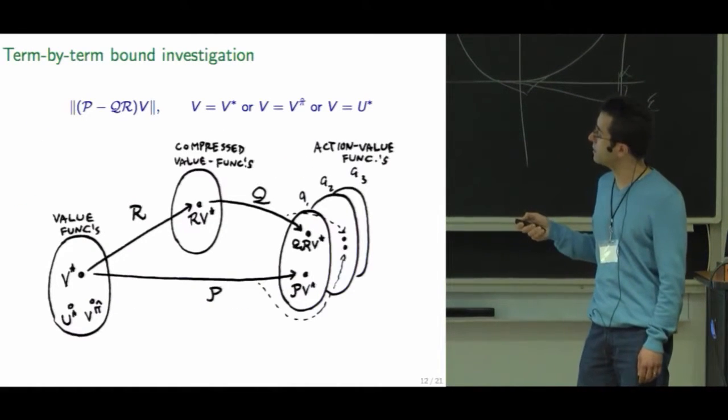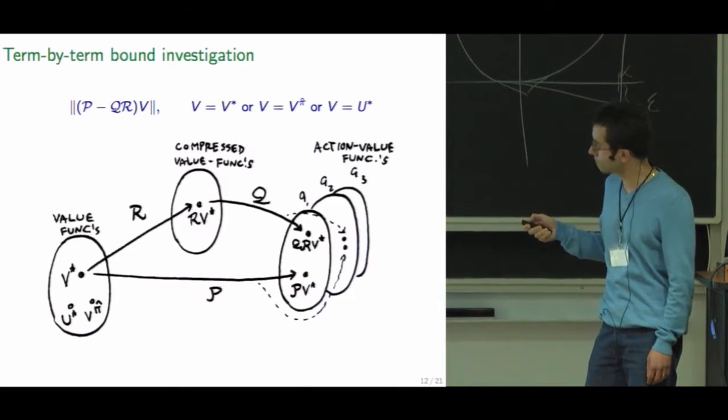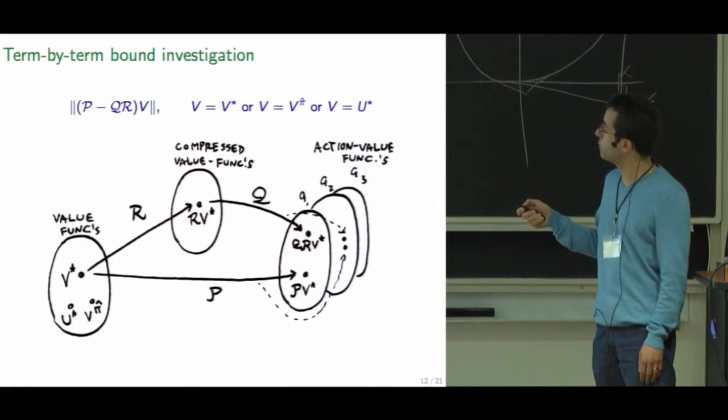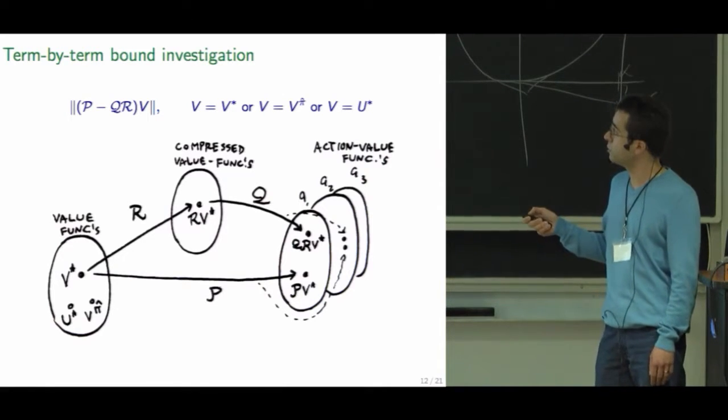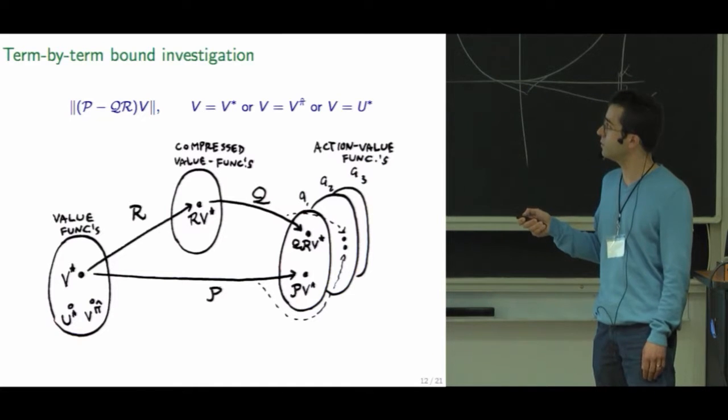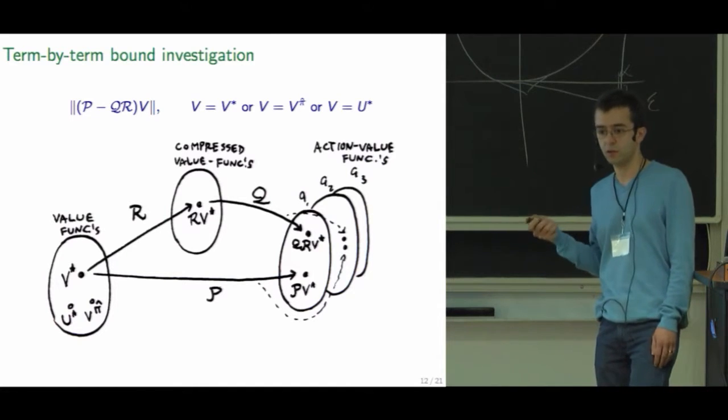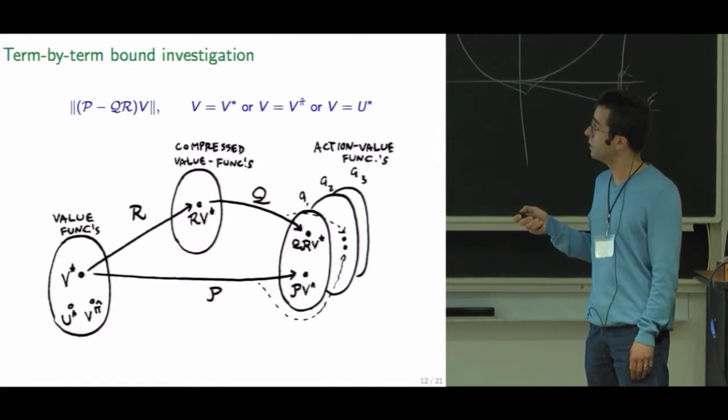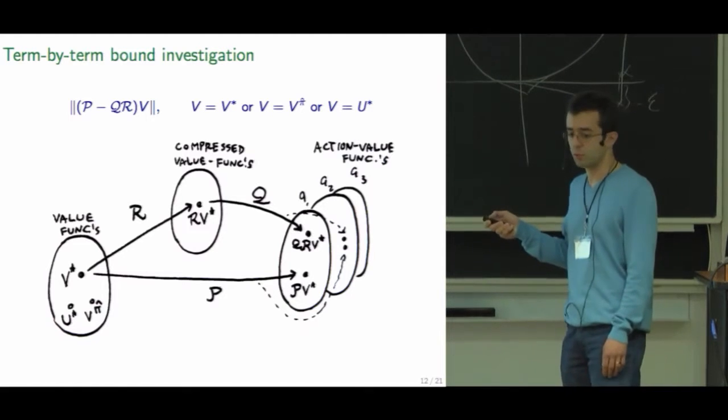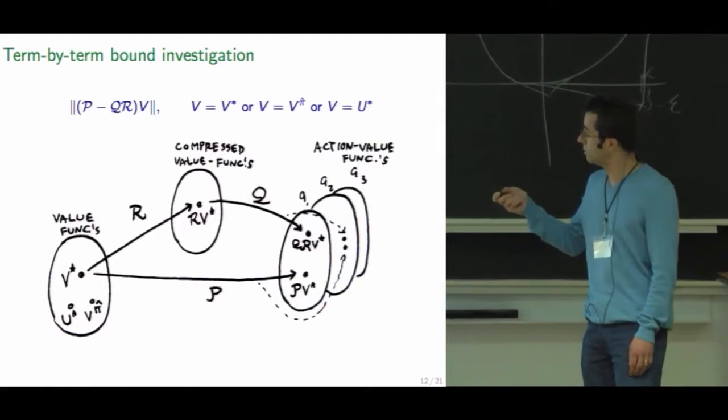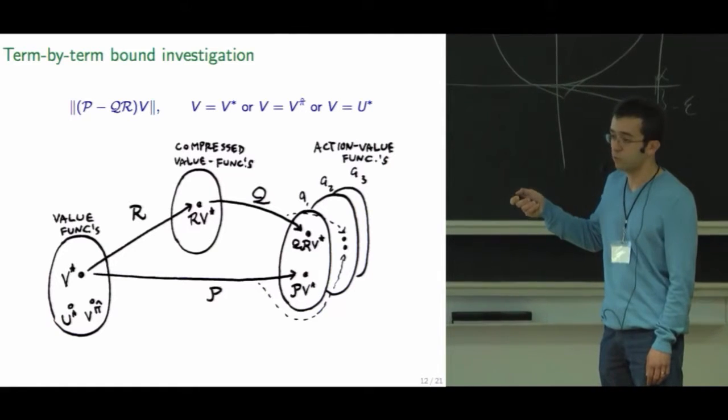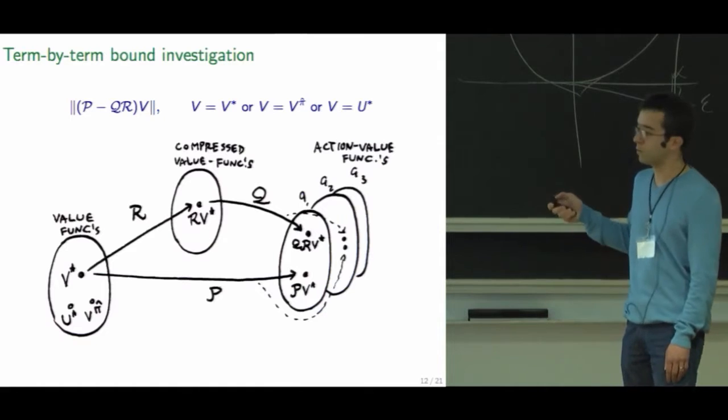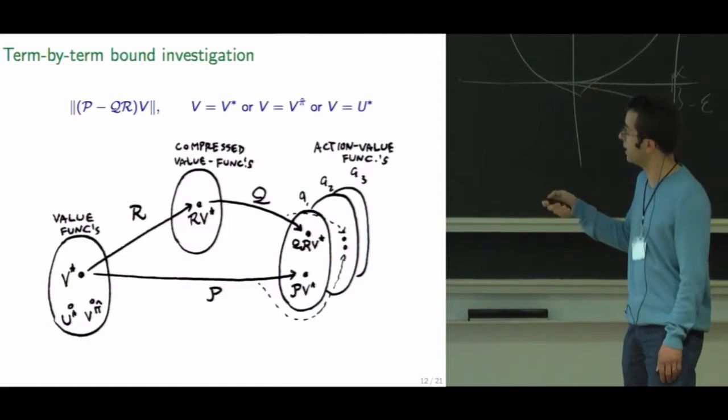First, the first error term is this reconstruction error. So essentially, it says that for v star, v pi hat or u star, you should be able to push it through your model and get roughly the same result as if you had taken the expected values of next states. If you notice here, it's quite different from requiring that the model be good pointwise or be close pointwise to P. And I'm also hiding here a norm over the actions. So for the weighted supremum norm, we simply take the maximum error over the actions for each state.